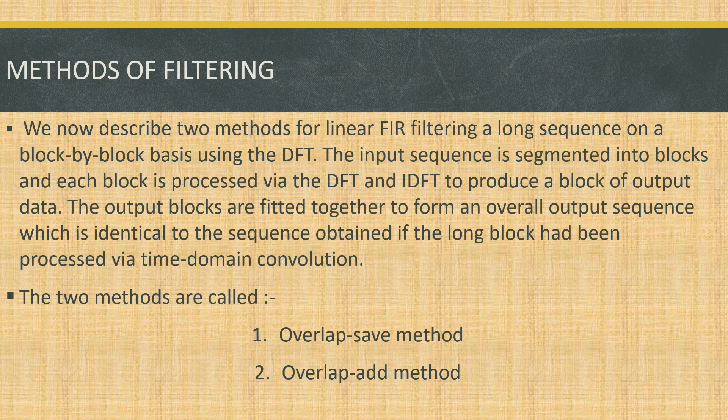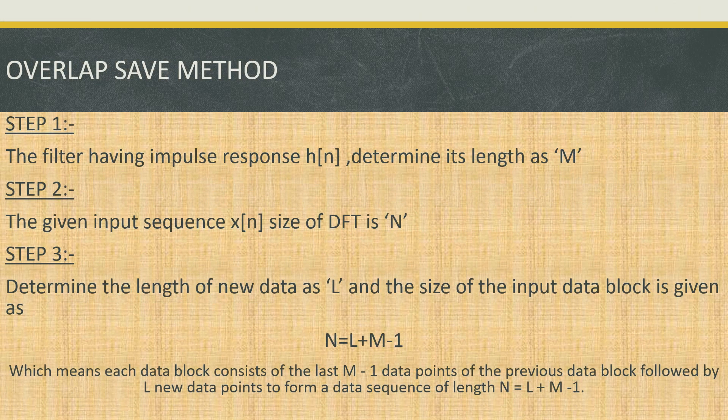The input sequence is first segmented into blocks of data and each block is processed using DFT. Then we use the inverse discrete Fourier transform to produce the block of output data. These output blocks are fitted together to form an overall output sequence, similar to the result obtained using time-domain convolution. To perform this, we use two methods: the first is the overlap save method and the second is the overlap add method. We are going to study the overlap save method.